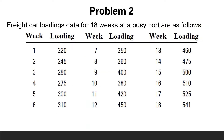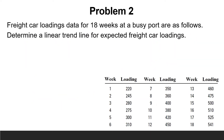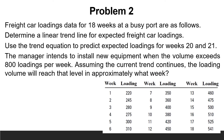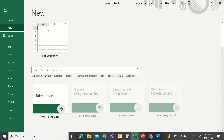Let us solve another example using Microsoft Excel and the calculator. Freight car loadings data for 18 weeks at a busy port are as follows. Determine a linear trend line for expected freight car loadings. Use the trend equation to predict expected loadings for weeks 20 and 21. The manager intends to install new equipment when the volume exceeds 800 loadings per week. Assuming the current trend continues, in approximately what week will the loading volume reach that level?